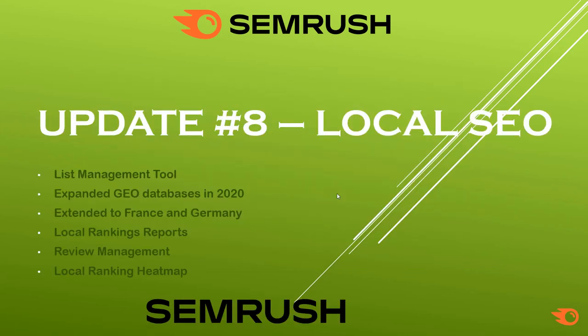Update number 8 is Local SEO. Local SEO shows how your business, agency, or individual professional is ranking in your local area. For example, in the San Francisco area, you can see how your local business — whether a kitchen, food, or shoe business — is ranking. These rankings appear in the form of local listings.